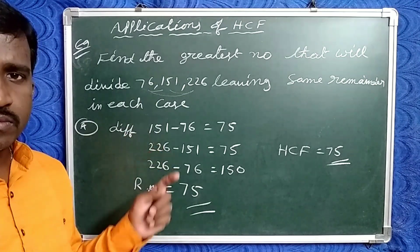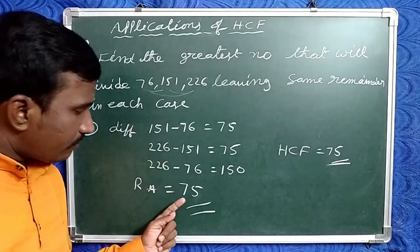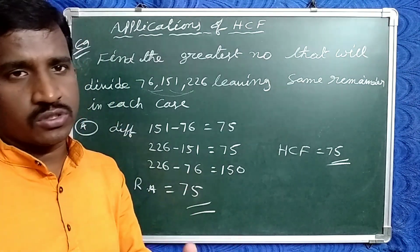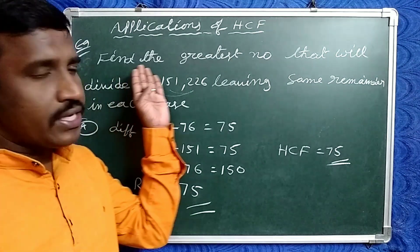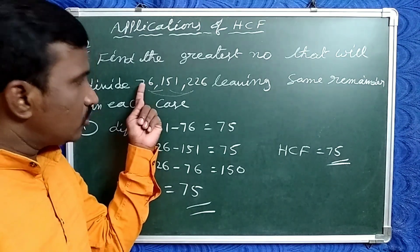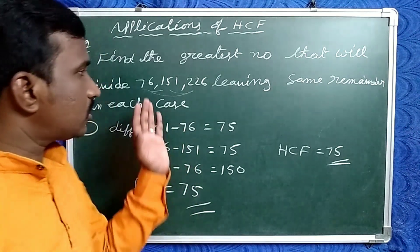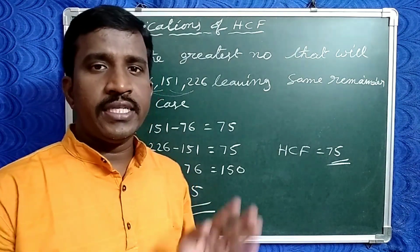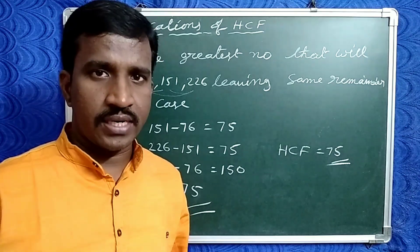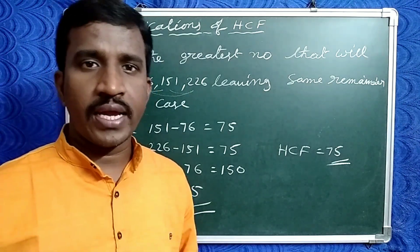Verification: 76 divided by 75 leaves remainder 1. 151 divided by 75 leaves remainder 1. 226 divided by 75 leaves remainder 1. That's why this is the greatest number that divides all three numbers leaving the same remainder. Find the difference between any two numbers, then find the HCF of the differences — that gives the required answer. Thank you.